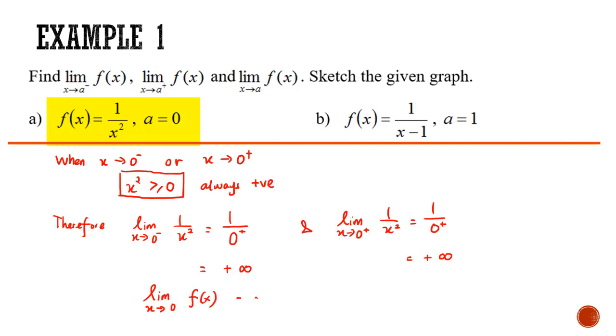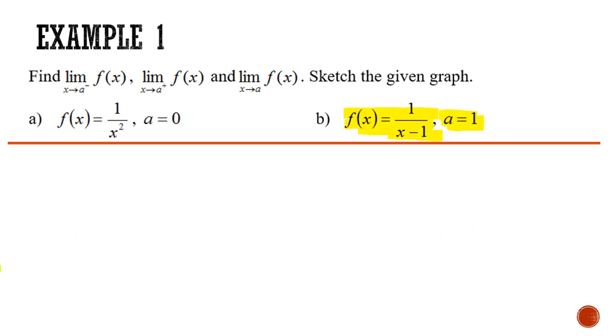we get that both with the positive infinity. We can conclude that the limit exists but undefined with the positive infinity. The graph will look like when getting closer to 0 from left going up, from right also going up.